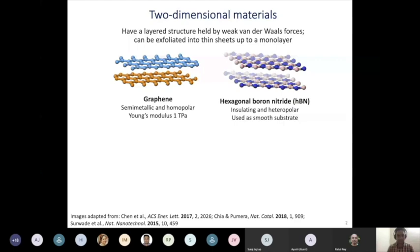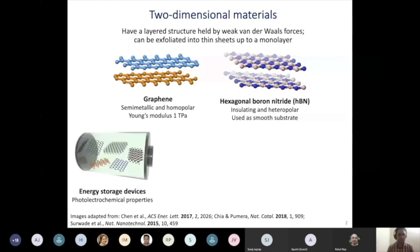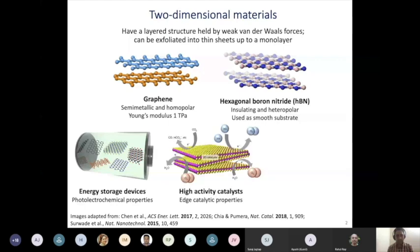In terms of some applications, you can think of using them in energy storage devices due to their very interesting photoelectrochemical properties. Because of their large surface areas and also a large number of edges on those surfaces, you can use those kinds of properties to make energy storage devices with high storage efficiencies. You can think of using their catalytic activity to make very high activity catalysts for reactions that have previously taken a lot of energy, so you can try to do them more efficiently.